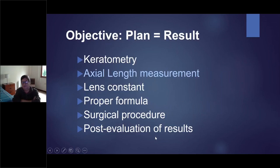If the objective is correct, the things you are planning must be achieved, must be the goal. You need to make very accurate axial length measurement. You want to know the lens constant, you must use the proper formula, and of course you must do the surgical procedure very well. The most important thing is to foster evaluation of the results. But sometimes this axial length measurement is very difficult in some cases.